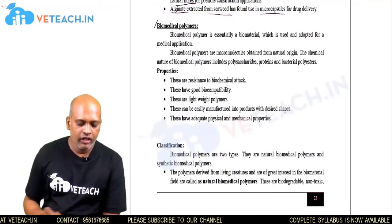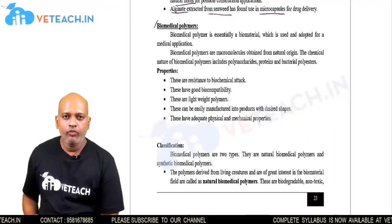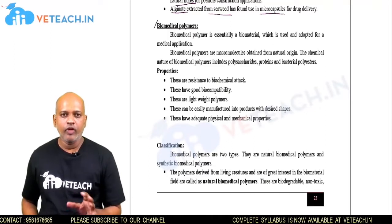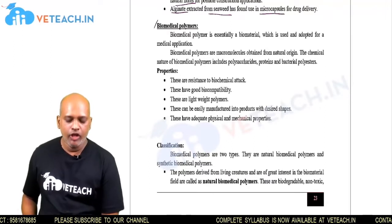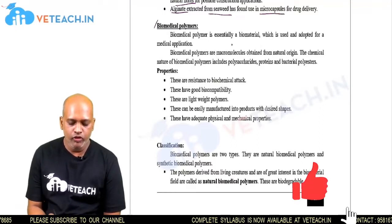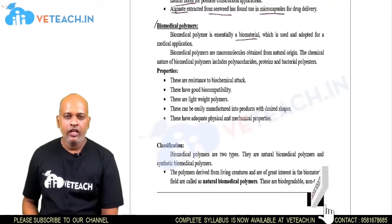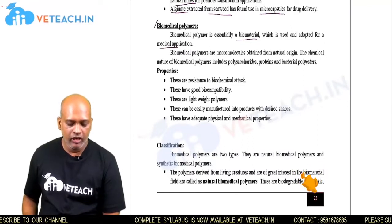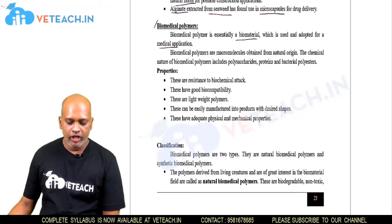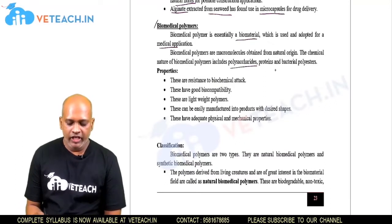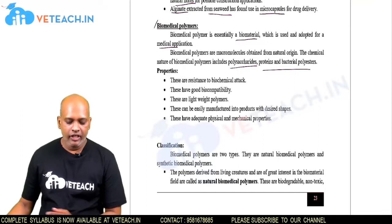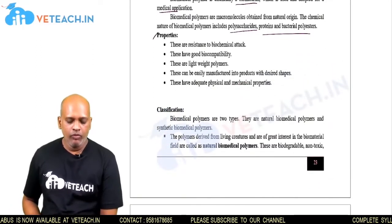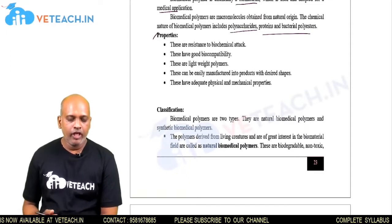Now we discuss biomedical polymers. Biomedical polymers are polymers that can be used in the medical field and are obtained from biological origin. They should be biomaterials usable in medical applications. These biomedical polymers are mainly polysaccharides, proteins, or bacterial polyesters.